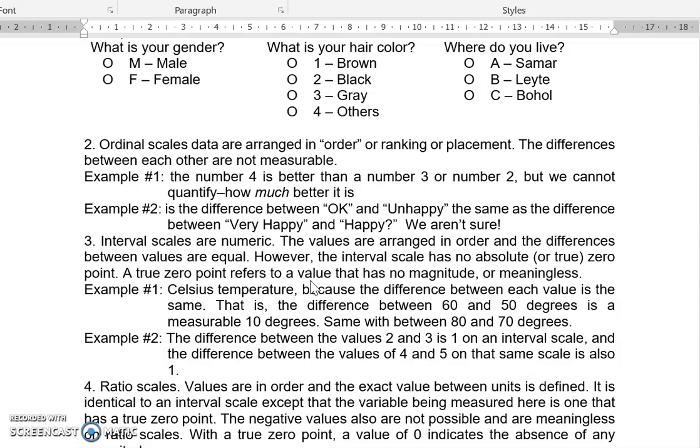Number two, example number two. Now, the difference between the values 2 and 3 is 1 on an interval scale. And the difference between the values of 4 and 5 on that same scale is also 1. So, when I'm trying to say interval scale, measurable is your difference between two points. There is an interval.